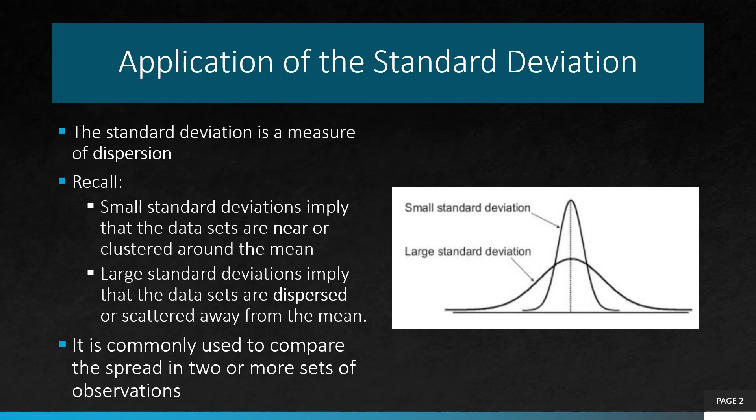Let's do a bit of recap on standard deviation. As we have learned before, standard deviation is a measure of dispersion. Dispersion refers to how spread out a set of data is. When a data set has a small standard deviation, this means that the values are near or clustered around the mean. Whereas, when a data set has a large standard deviation, this implies that the values are dispersed or scattered away from the mean.